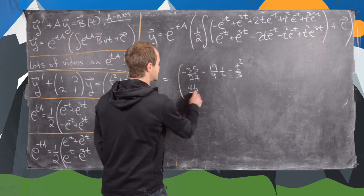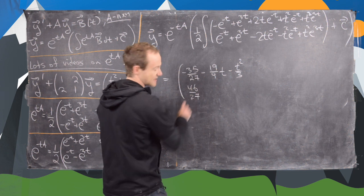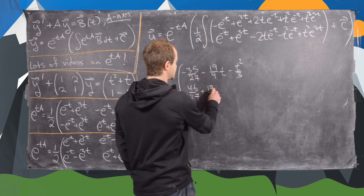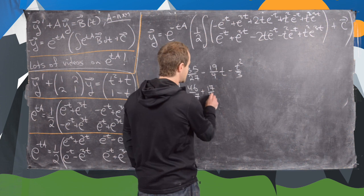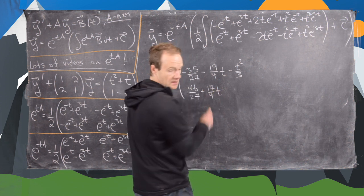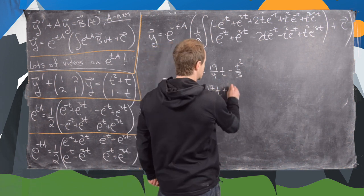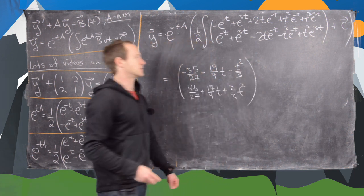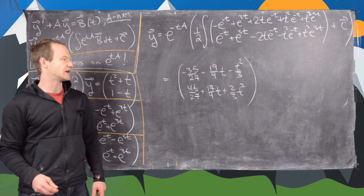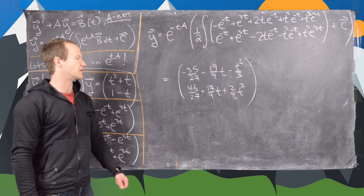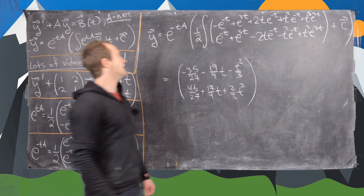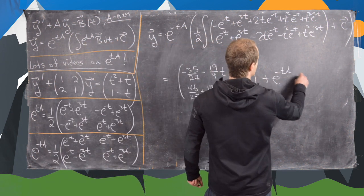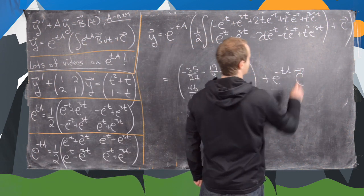The bottom entry is: 46 over 27, plus 17 over 9 times t, plus 2 over 3 times t squared. That's what you get for the particular part, plus e to the minus tA times this vector c.